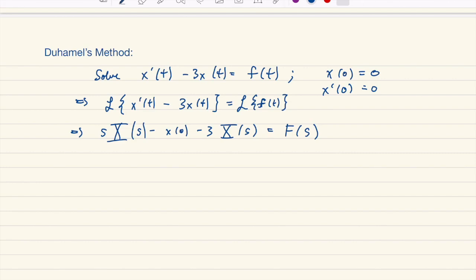All right, what we're going to do now is try and solve for capital X. Remember that little x of 0 was 0, so that little x of 0 actually cancels.